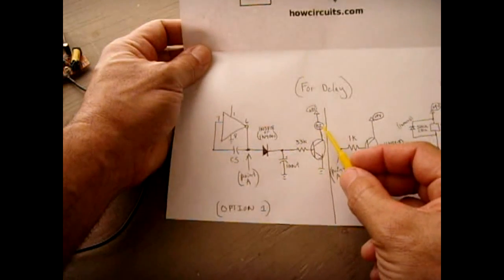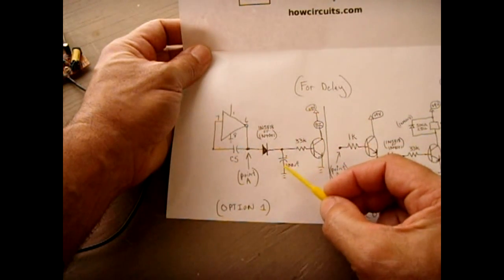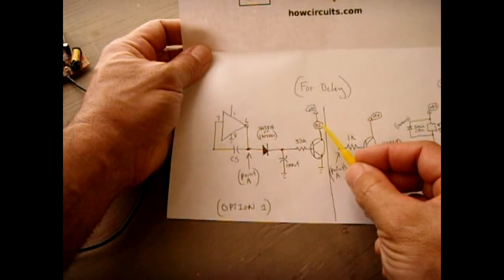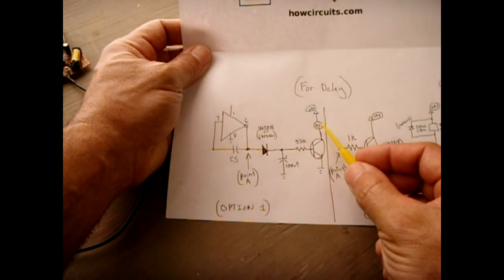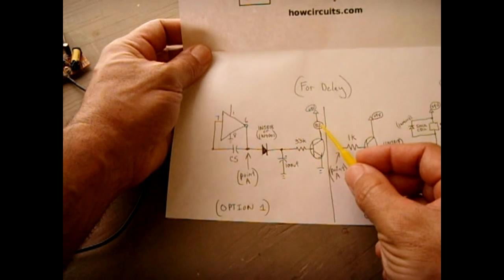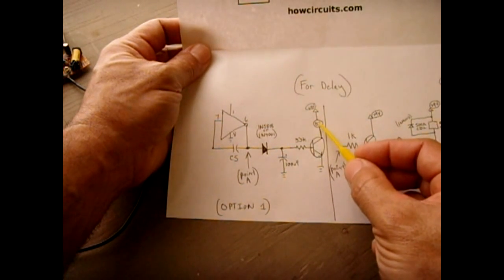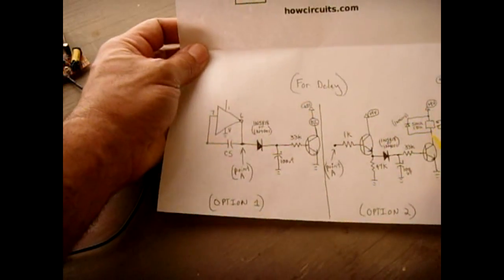If you don't use the reed relay, the buzzer will come on. But as the capacitor drains down and the transistor slowly turns off, the buzzer will fade out rather than instantly go off. If you want it to instantly go off, you're going to need the reed relay coil connected in this location, just like you see right here.